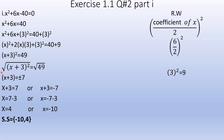Taking square root on both sides, square root cancels out. Square root of 49 is 7. So x plus 3 equals plus 7 or x plus 3 equals minus 7. Therefore x equals 4 or x equals minus 10. The solution set is {4, minus 10}.